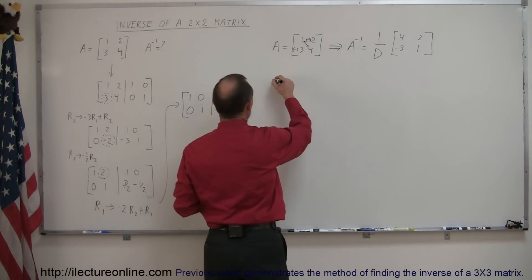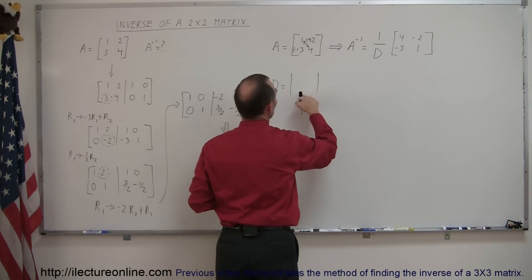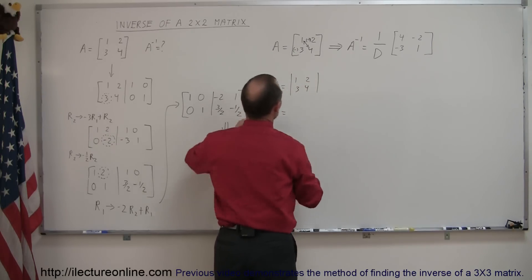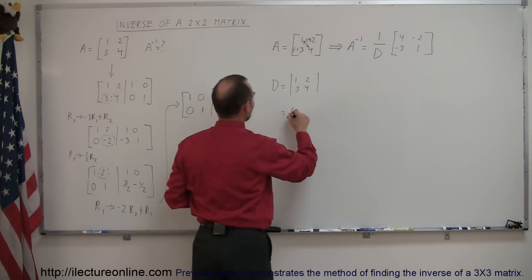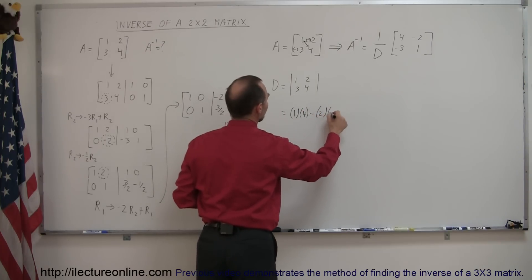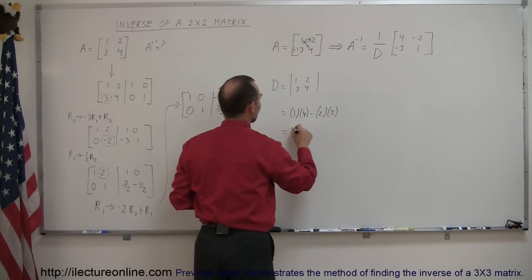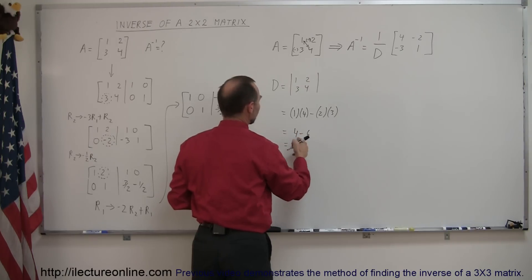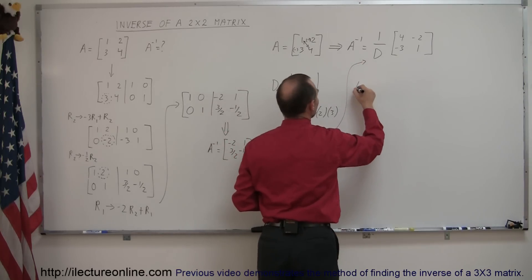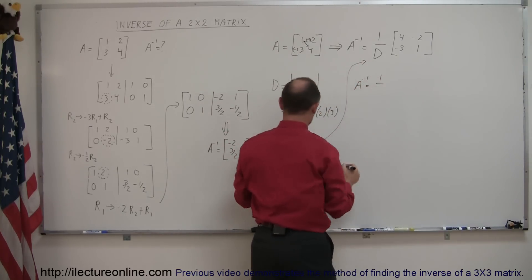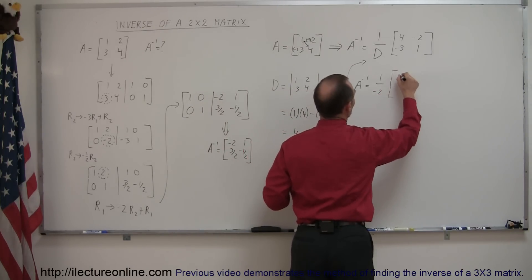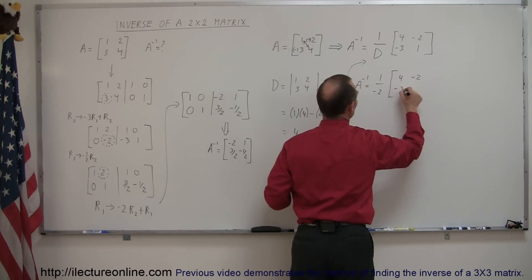The determinant of a 2x2 matrix is found as follows: for matrix [1, 2; 3, 4], it equals the product of the main diagonal — 1 times 4 — minus the product of the other diagonal — 2 times 3. So that's 4 minus 6, which equals negative 2. Since the determinant is negative 2, we plug that in.